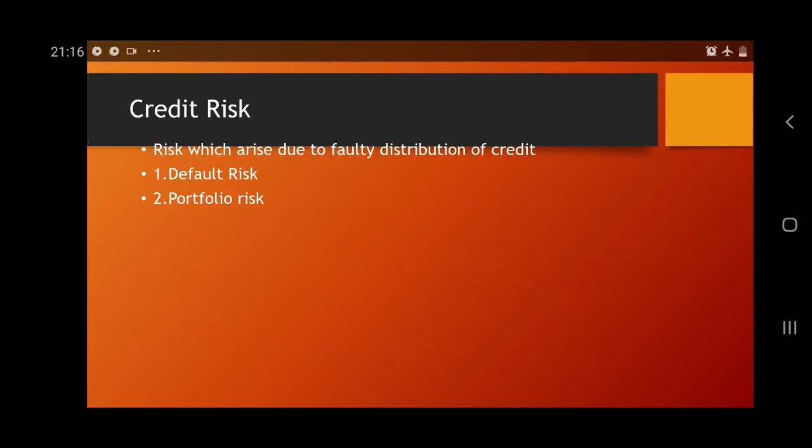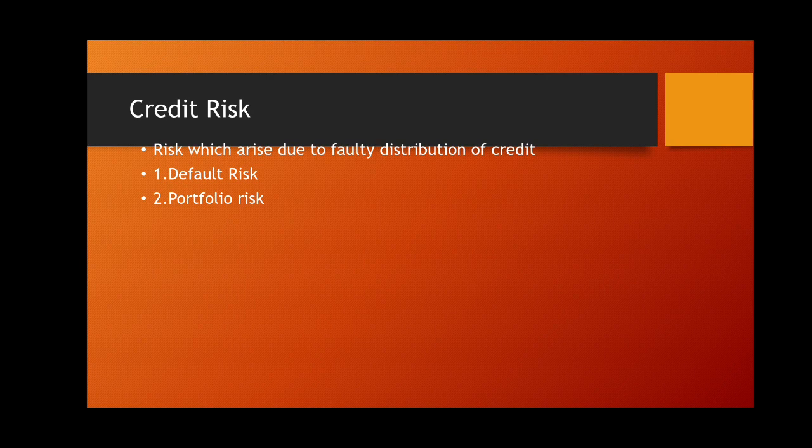Credit risk is nothing but the risk which arises due to faulty distribution of loans. The bank is invariably faced with different types of risk nowadays. Credit risk is the main risk faced by all banking sectors, but there are a number of risks already included within credit risk. We have to focus on two types: default risk and portfolio risk. Credit risk means the risk which arises due to faulty distribution of loans, or when the counterparty fails to repay the loan.